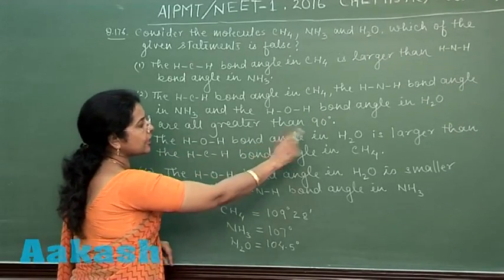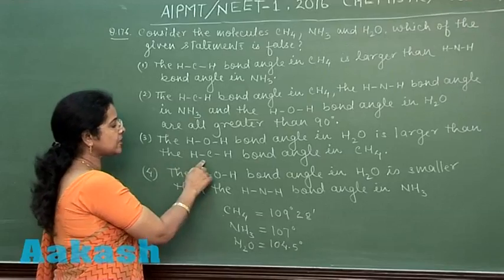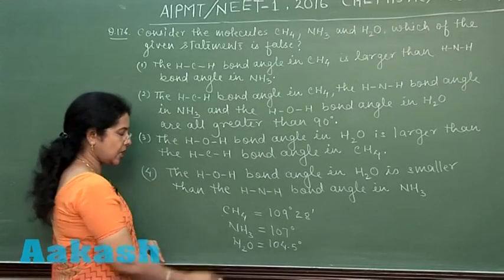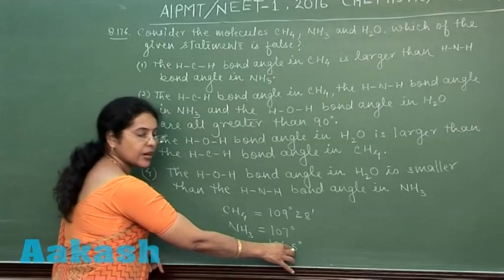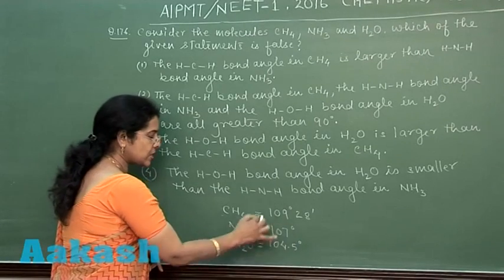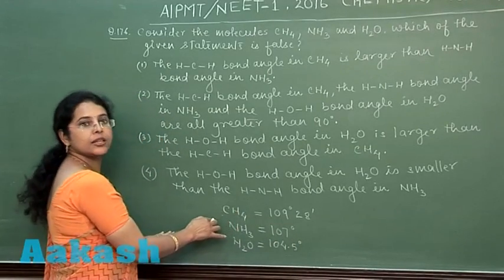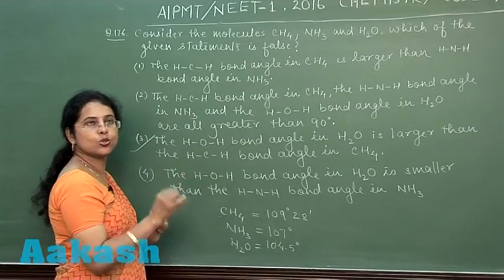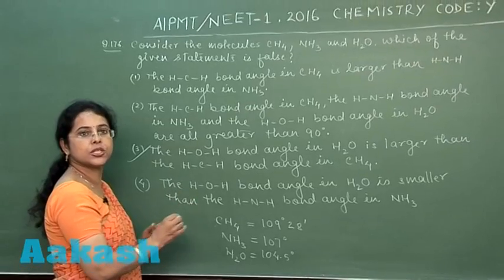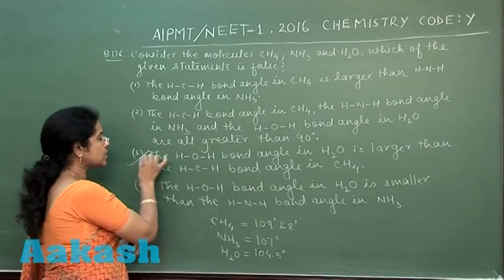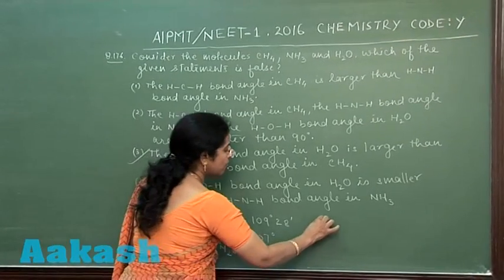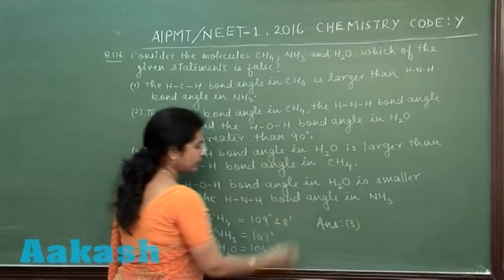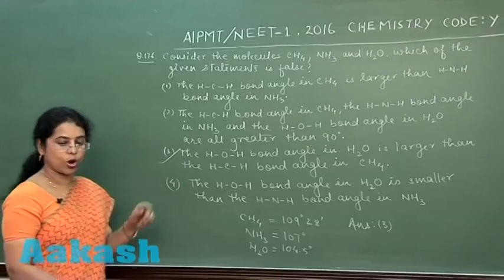The third statement claims the HOH bond angle in water is larger than the HCH bond angle in methane. However, the bond angle in water is 104.5 degrees, which is less than the bond angle in methane. Therefore, the third option is the false statement, and the correct answer to question 176 is option 3.